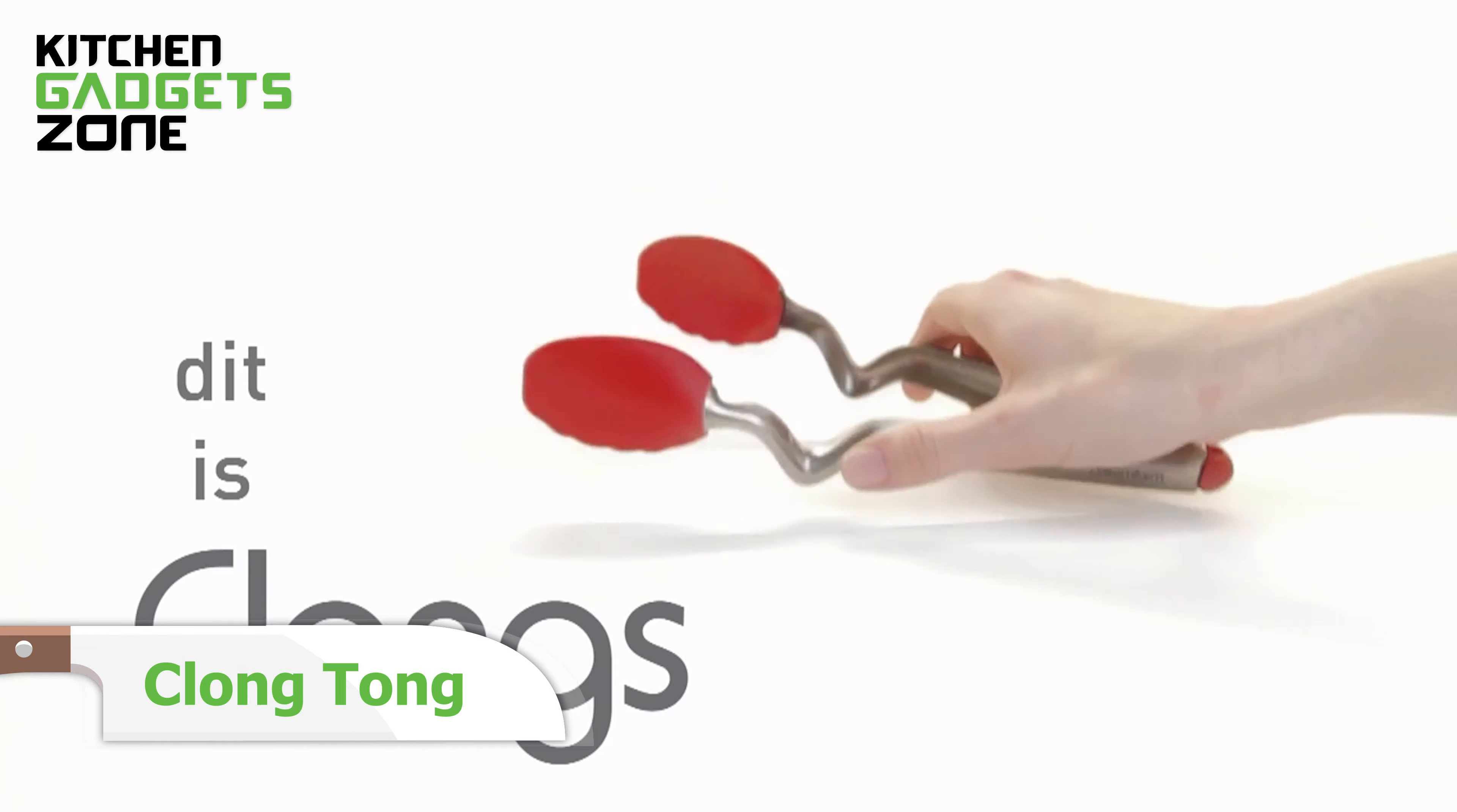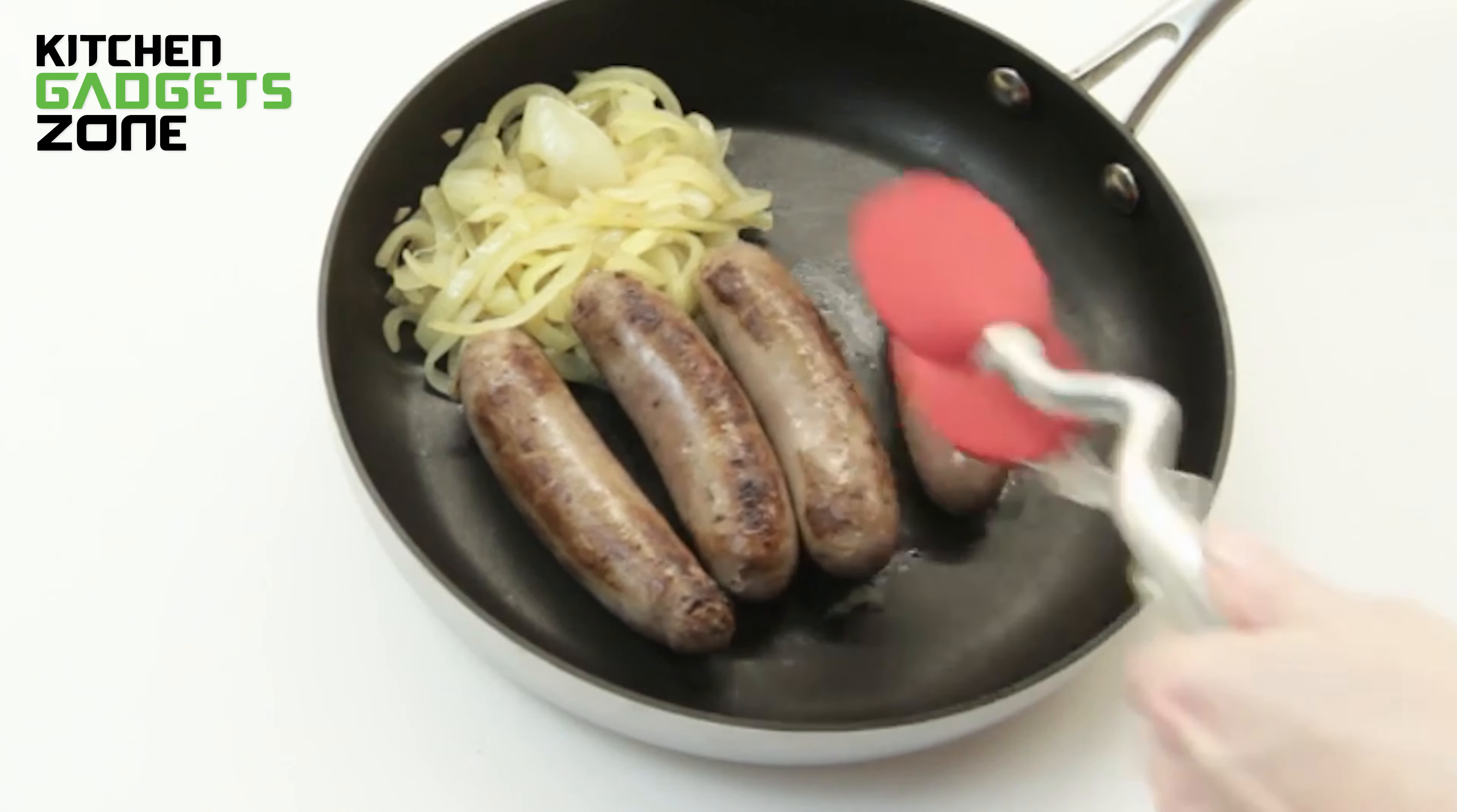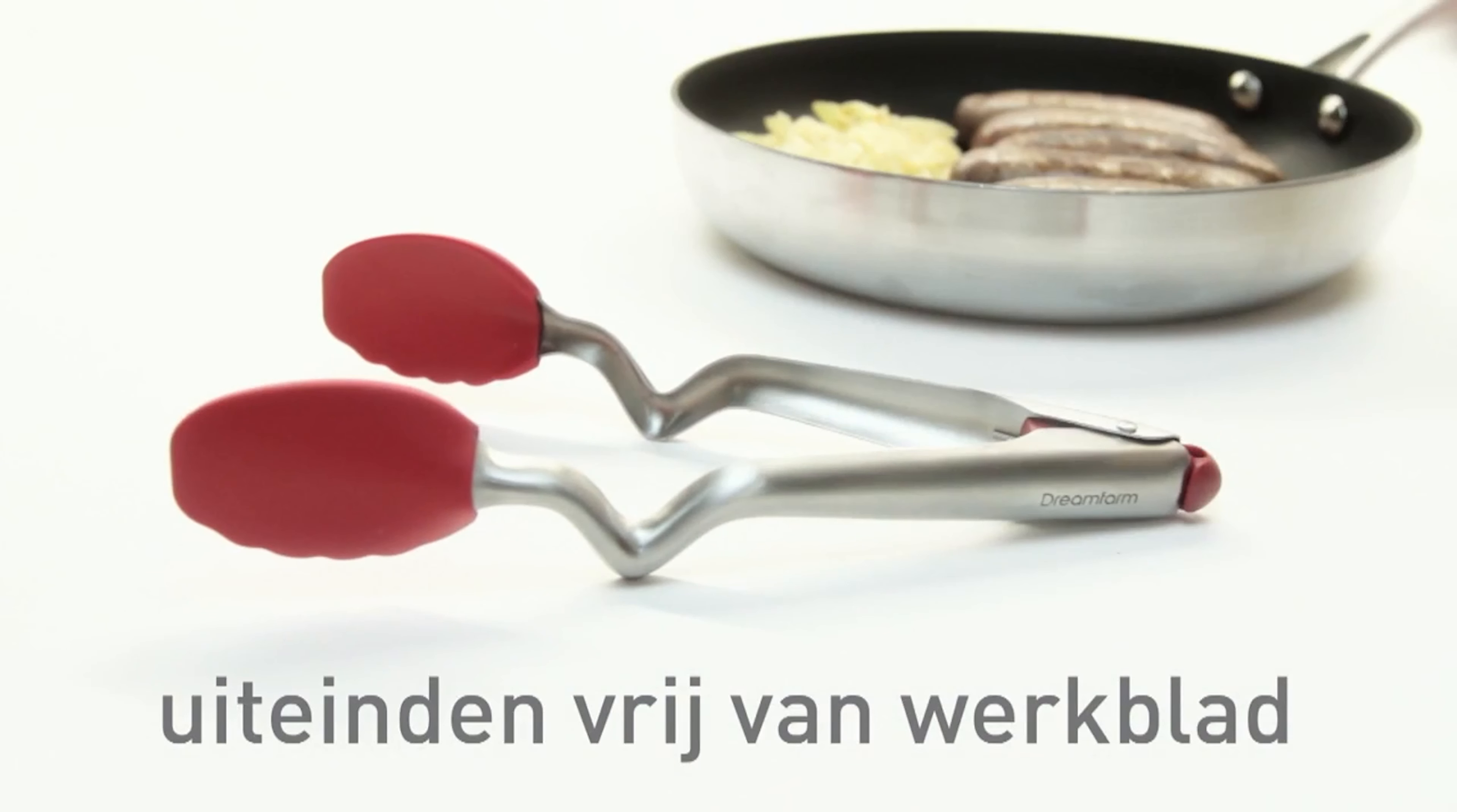Meet clongs, the tongs that are always up for the task. These ingenious kitchen tools feature a clever bend in the handles that keeps their tips up when you put them down, ensuring mess stays off your countertops and germs stay out of your food. With the push of a button, clongs open or lock closed, just like a retractable pen. It's so easy, you can do it with one hand.